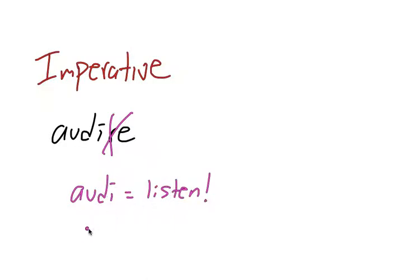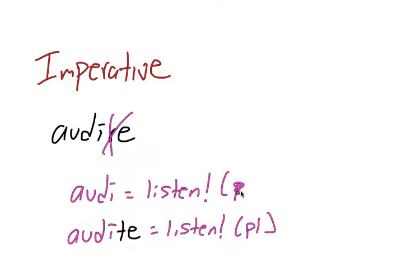And if I wanted to make it plural, I would add te, just like for first and second conjugation. Of course, the translation would stay the same, I would just be talking to more than one person. So that's how you form the imperatives for fourth conjugation.